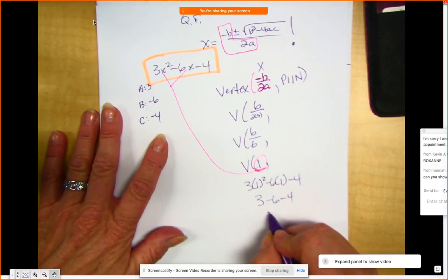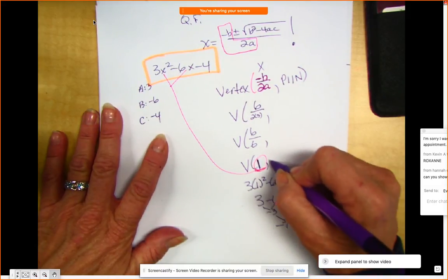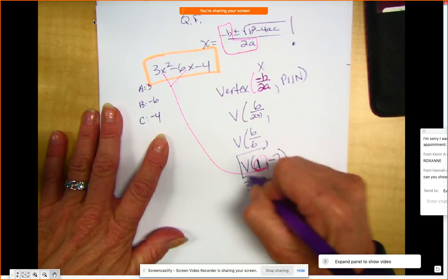I do 3 minus 6, I get negative 3. Negative 3 minus 4, negative 7. So I input the 1, I got out a negative 7. This is my vertex.